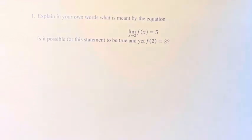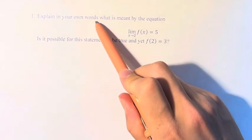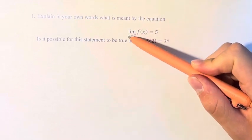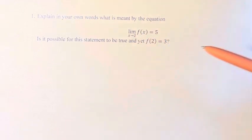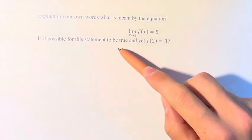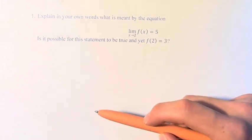Hello and welcome back to another video. In this problem, we're asked to explain in your own words what is meant by the equation: the limit as x approaches 2 of f(x) is equal to 5. And we're also asked, is it possible for this statement to be true and yet f(2) is equal to 3?